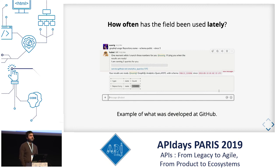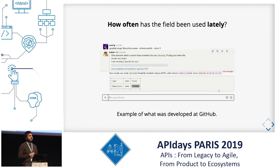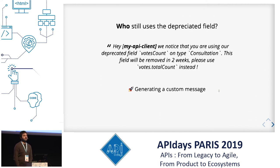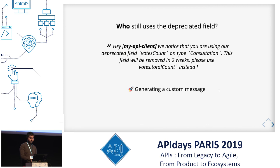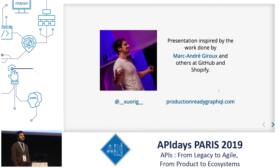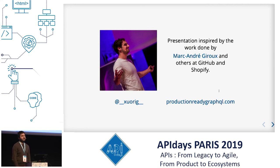At GitHub, they created a little bot on Slack that gives them this usage — you ask it the usage of the field 'name' on the repository type on the public schema since five days. At Cap Collectif, we generate custom messages for deprecations that are still being used and send them directly to our clients. I want to thank Marc-André Giroux — if you want to do public APIs, follow him. That's all for me. Thank you.